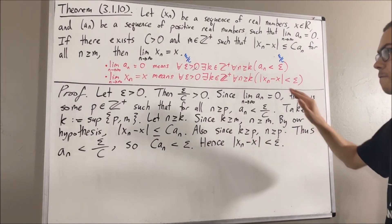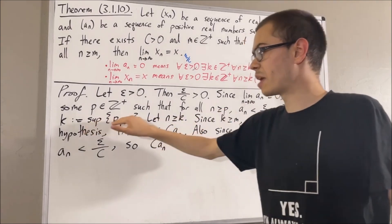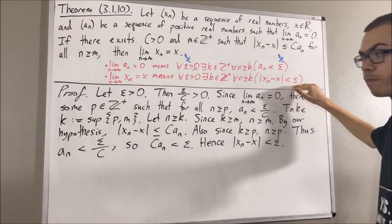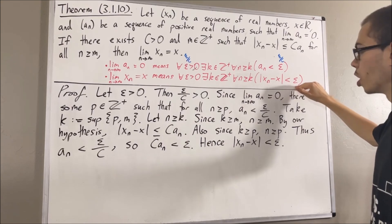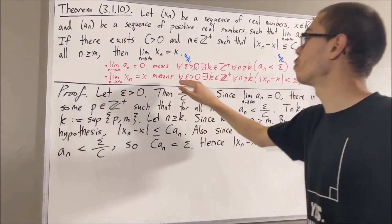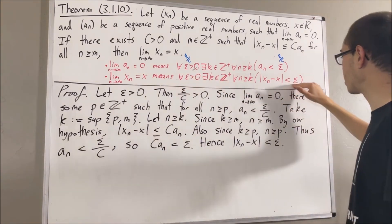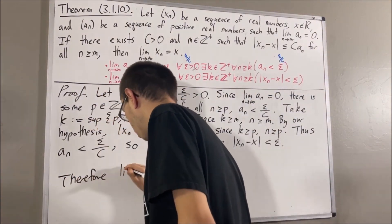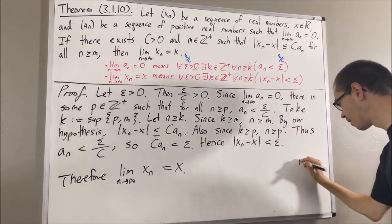So we have found a positive integer k which makes this statement turn out true. We showed that this was true under the assumption of some arbitrary epsilon greater than zero. And since epsilon was arbitrary, this means we have shown: for all epsilon greater than zero, this is true. So we have proven this entire statement, which amounts to proving that xn converges to x. And that was what we wanted to prove. So this completes the proof.